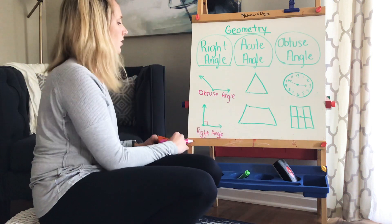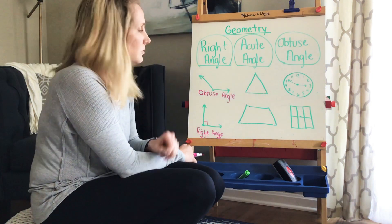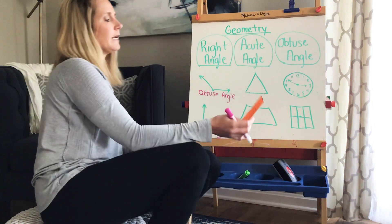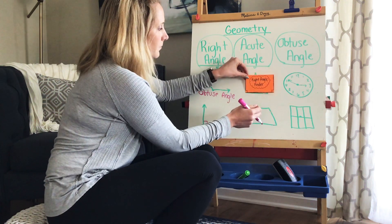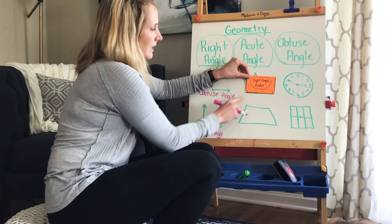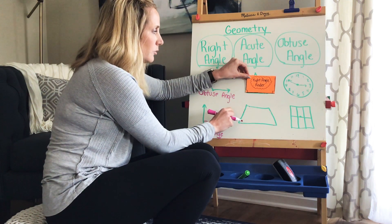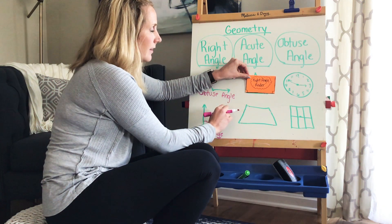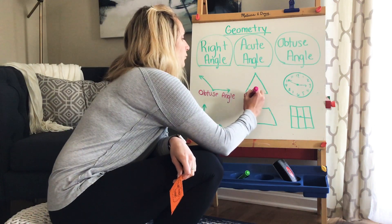Now sometimes they want you to find the angle of a shape. We see this shape has three sides — we should know by now that that's a triangle. I'm going to put my handy-dandy right angle finder in the corner, line up my bottom line, and I don't see the second line. That means it's less than 90 degrees, which means it's called an acute angle.